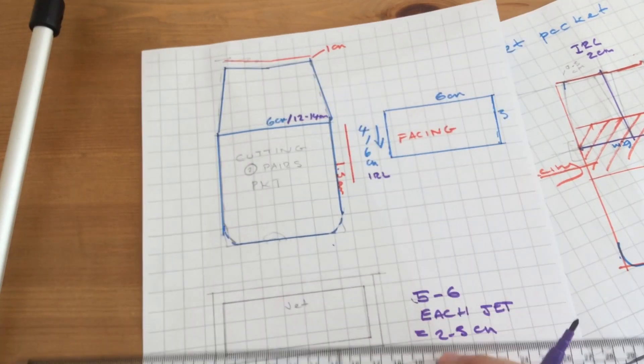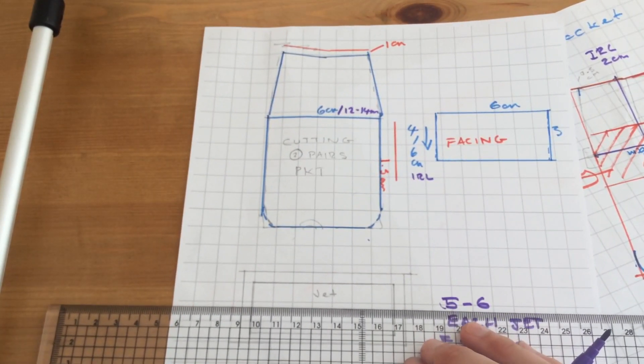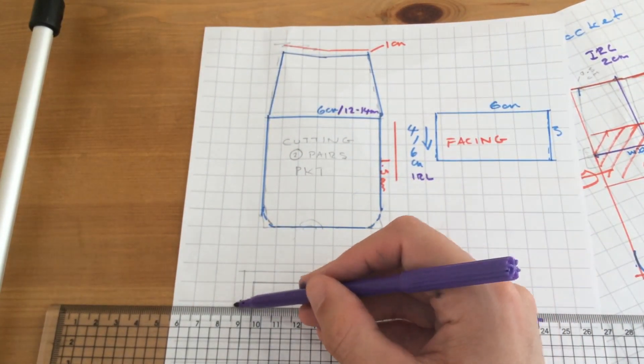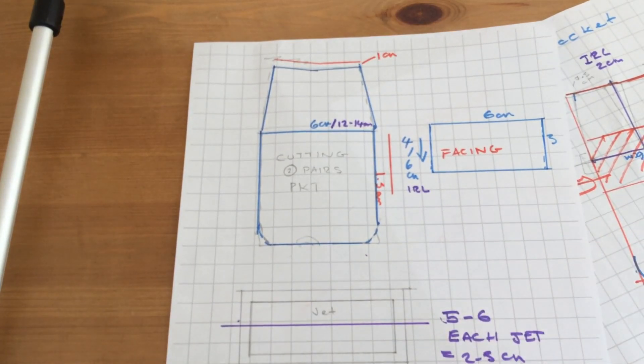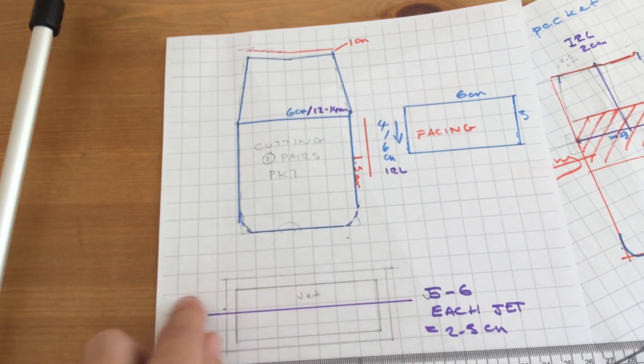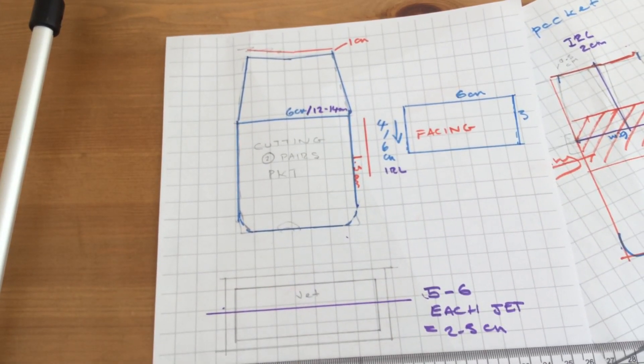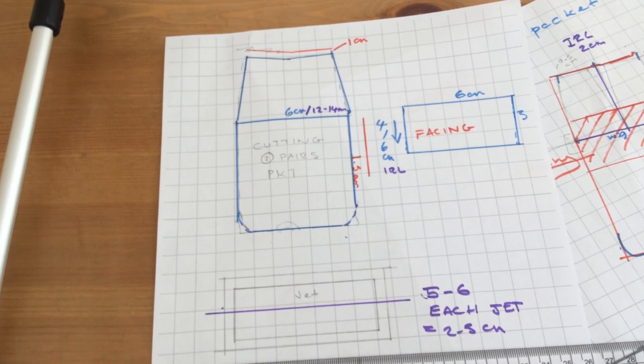So that basically means that although this is one pattern piece at the moment, when you cut it or when you're sewing it, you will cut it in half equally. I don't think that's equal.